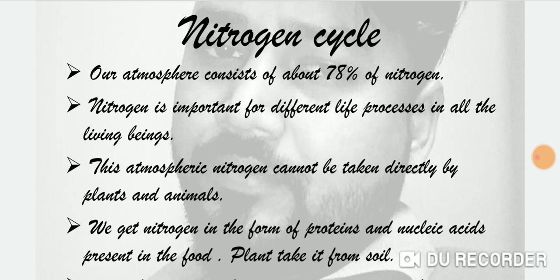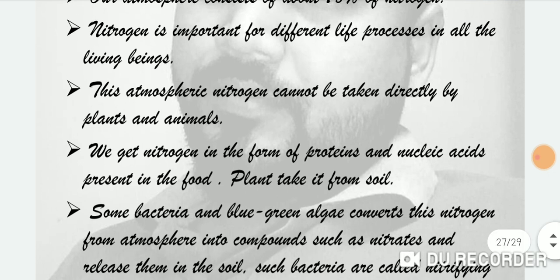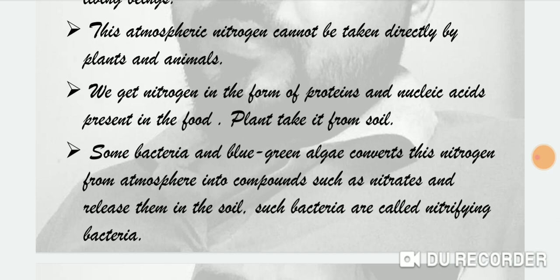This atmospheric nitrogen cannot be taken directly by plants and animals. We get nitrogen in the form of protein and nucleic acids present in food. Plants take nitrogen from the soil. Some bacteria and blue-green algae convert atmospheric nitrogen into compounds such as nitrates and release them into the soil. Such bacteria are called nitrifying bacteria.